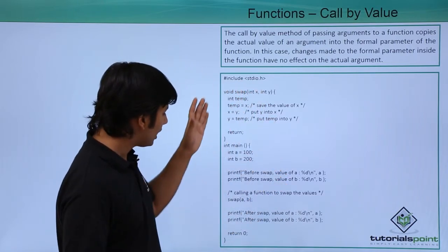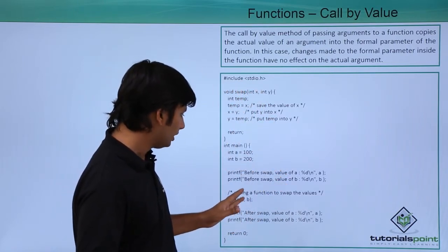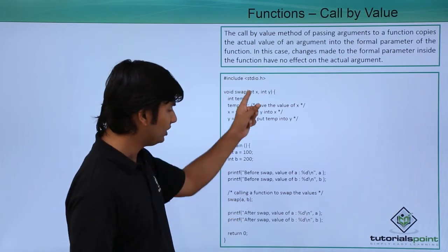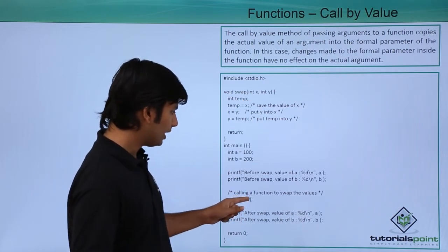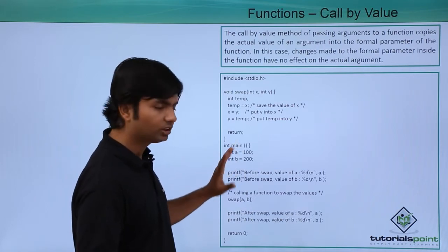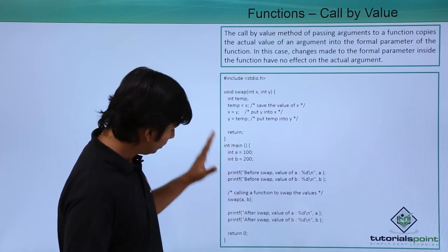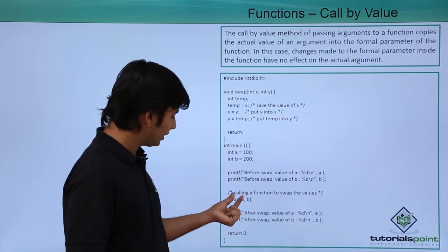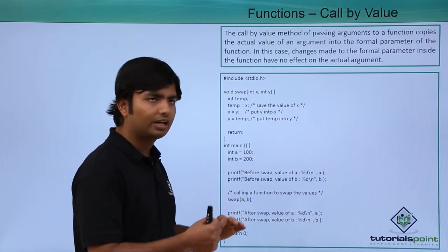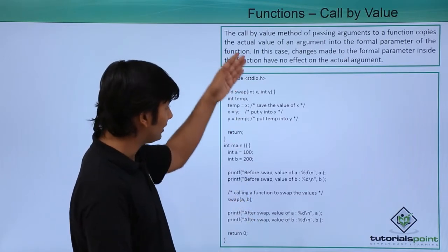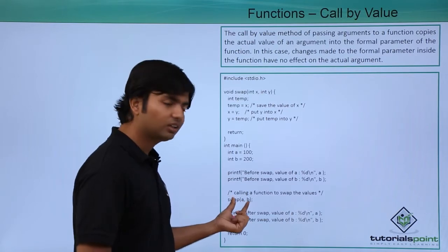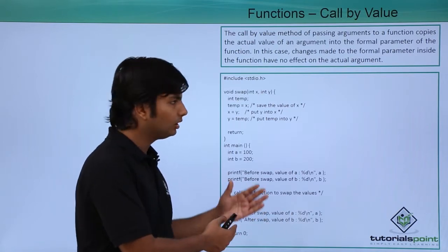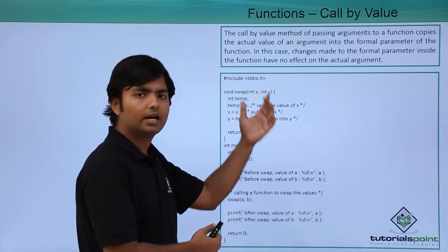But by the time I will call this swap method, I have passed a couple of values again of integer type, that is a and b, and both a and b are having some values inside. So this means a and b are actually carrying a value from the very beginning while x and y are not. So these are the actual parameters and these are the formal parameters.